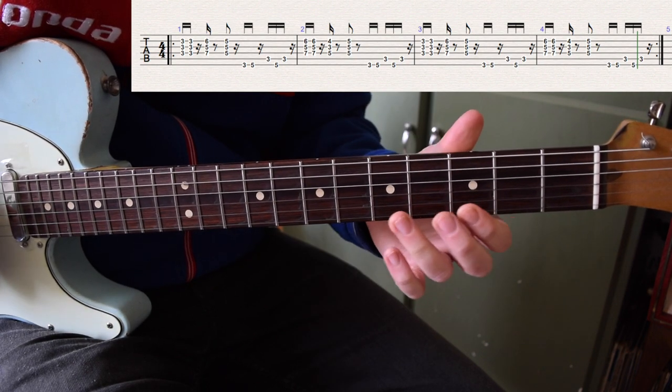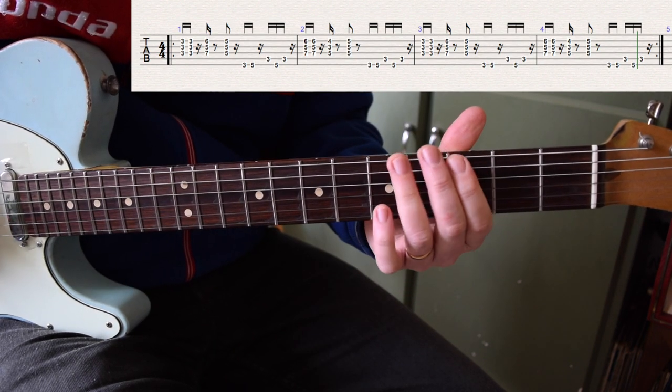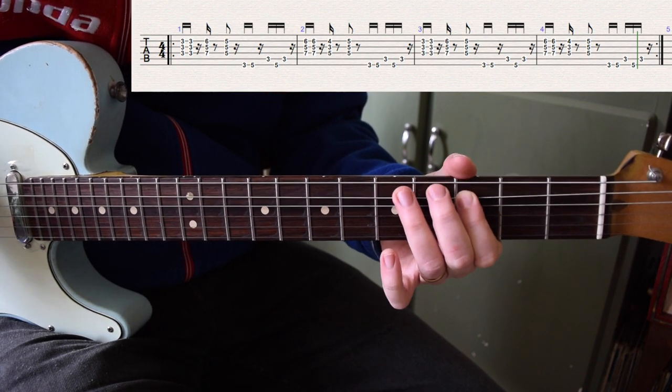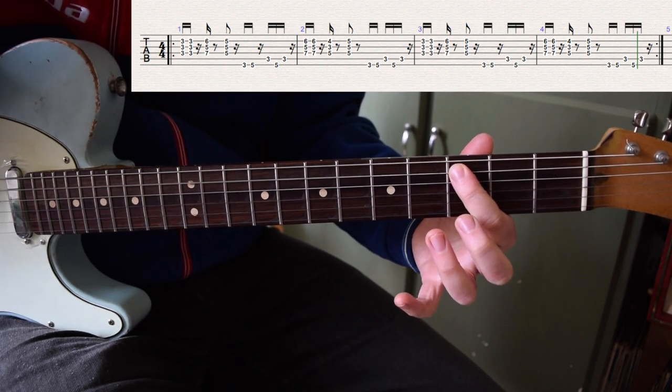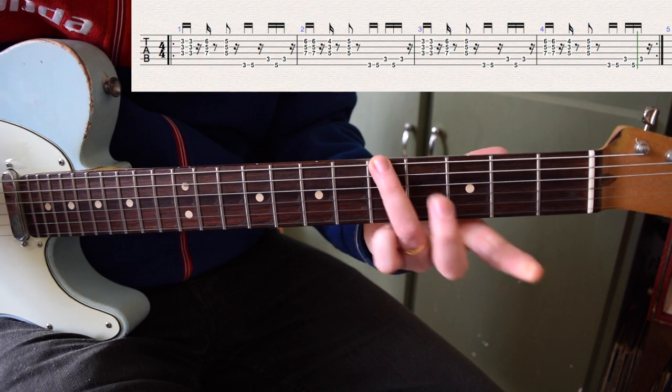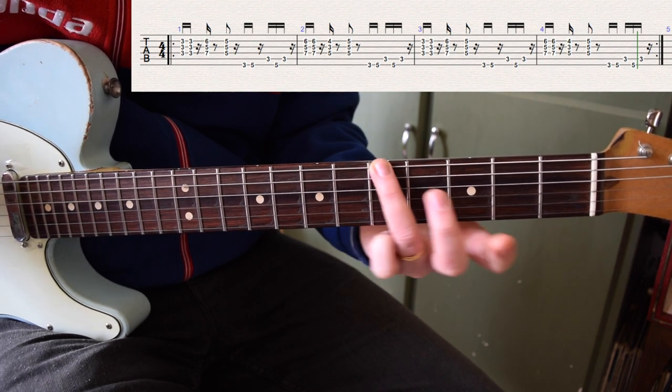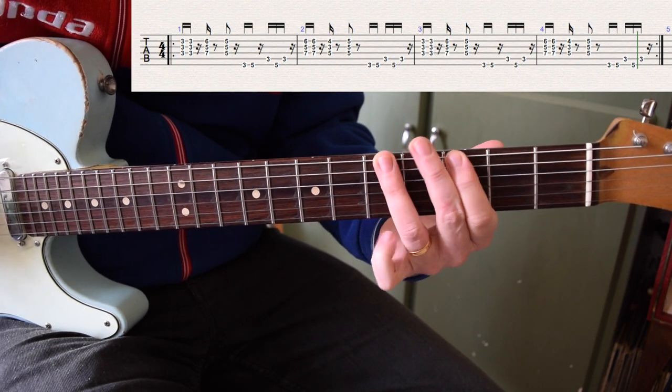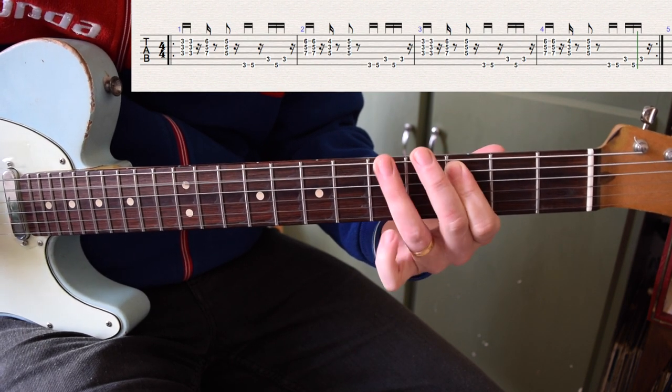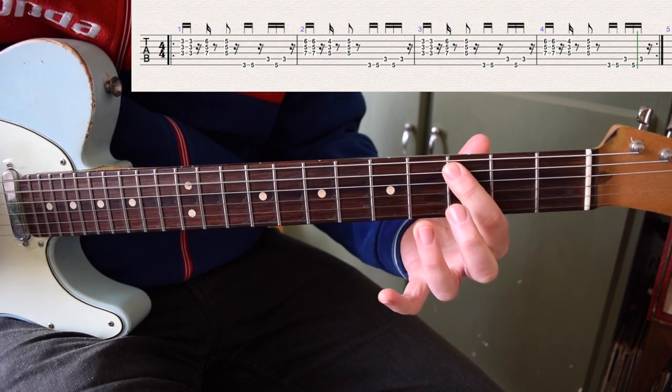The opening riff is just a pentatonic riff resolving to the roots. We're going to play fret three on the low E string, fret five on the low E string, up to C fret three on the A string, and then back to the A and back to the C.